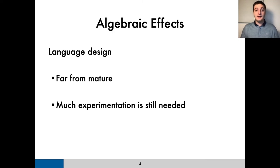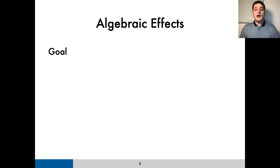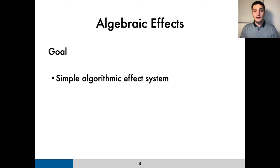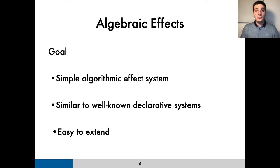Clearly, having large, feature-rich languages is at odds with the need for experimentation, so having a small basic calculus with a simple prototype implementation is very important. Our goal, then, was to formulate a simple algorithmic type and effect system for a core calculus with algebraic effects and handlers. By keeping the system's formal description conceptually similar to well-known declarative effect systems, the task of extending the resulting implementation to support more advanced features should be straightforward. This is crucial for our approach, in which we set out to have a formal calculus that evolves alongside its implementation.